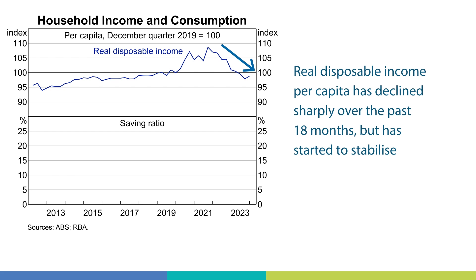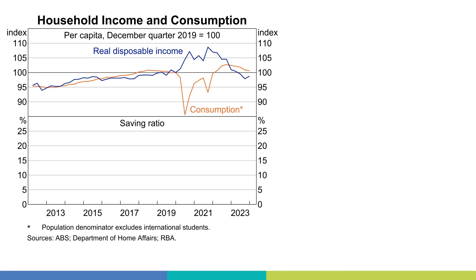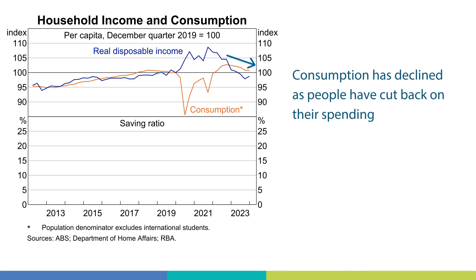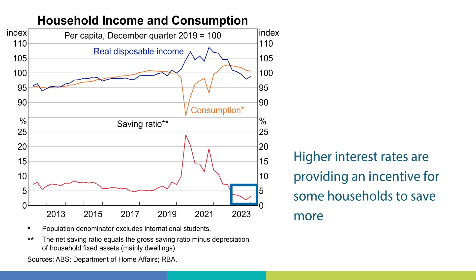However, real disposable incomes are beginning to stabilise. Consumption, shown in orange, has also declined as people have cut back on their spending, particularly for discretionary items like dining out or shopping. Some households have also saved more than expected, and the household saving ratio has increased, shown in red in the bottom panel. One reason for this is that high interest rates are providing an incentive for some households to save more.